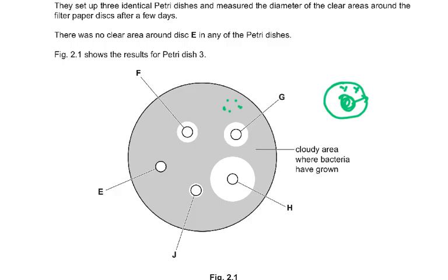The cloudy area is where the bacteria are growing, and the clear area means the bacteria have been killed because of the antibiotic which has diffused out of the filter paper. The filter paper has been soaked in an antibiotic, and they are different antibiotics.